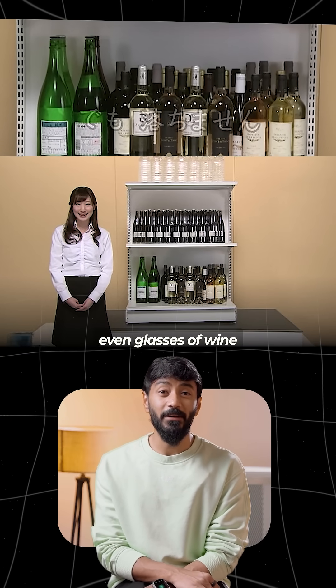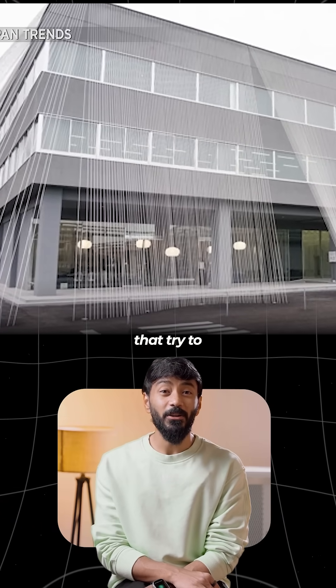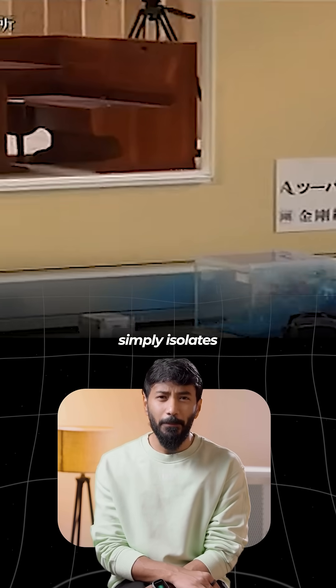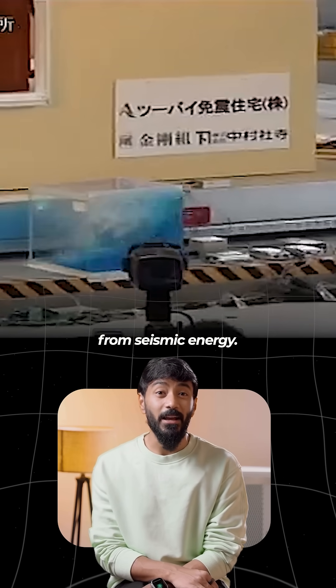In live demos, even glasses of wine didn't spill. Unlike traditional buildings that try to resist earthquakes through rigid reinforcement, the Air Danshin System simply isolates the building from seismic energy.